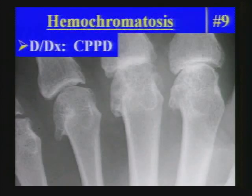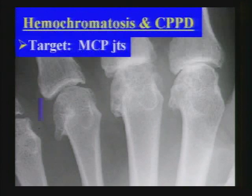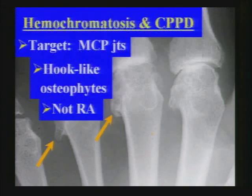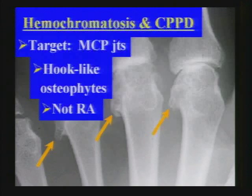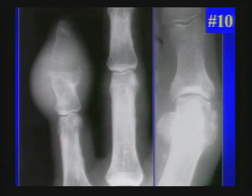Next unknown — hemochromatosis, though CPPD is certainly an acceptable differential. This case highlights the importance of distribution when analyzing arthritis. Here the target site is the MCP joints, where we see arthritis with hook-like osteophytes. Rheumatoid arthritis also affects these joints but tends not to cause bone production — it causes erosions but not osteophytes. These hook-like osteophytes are characteristic of hemochromatosis and CPPD.